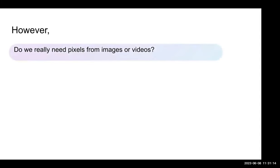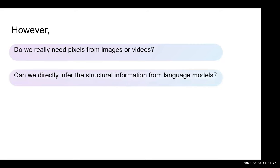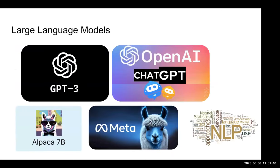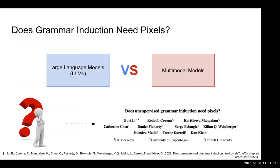We are wondering: do we really need pixels from images or videos? We already see the superpower of ChatGPT — can we directly infer structural information from the language model? Maybe the language model contains equivalent information to what the visual model would provide. As a proof of concept, the NLP community has embraced the huge success of large language models such as GPT-3, ChatGPT, etc. To rethink these best papers and the relationship between grammar induction and pixels, we started a project to challenge the question: does unsupervised grammar induction need pixels?